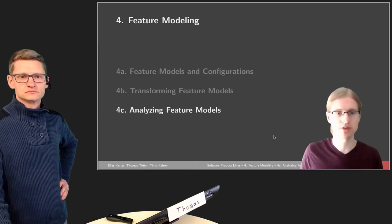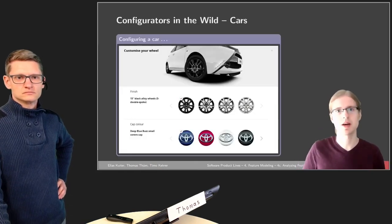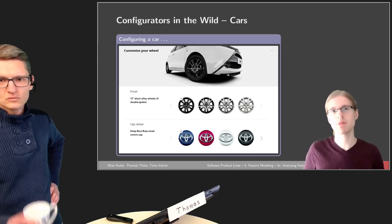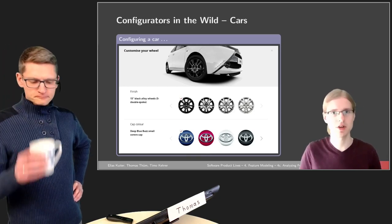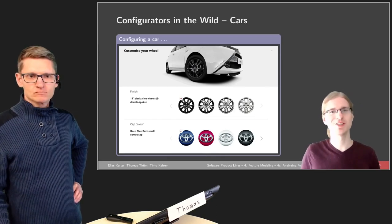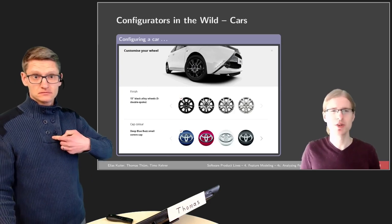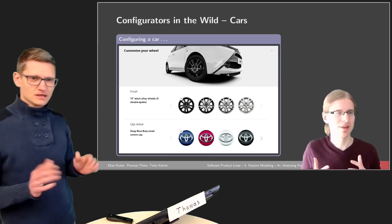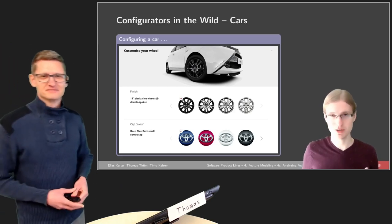For finding bugs, we get into the first example of this section, namely web configurators. In this example, it's a car configurator. I'm not an expert on this, so I would like to hand over to Thomas, who somehow broke something in this configurator. Do you care to explain what you did and how you did it?